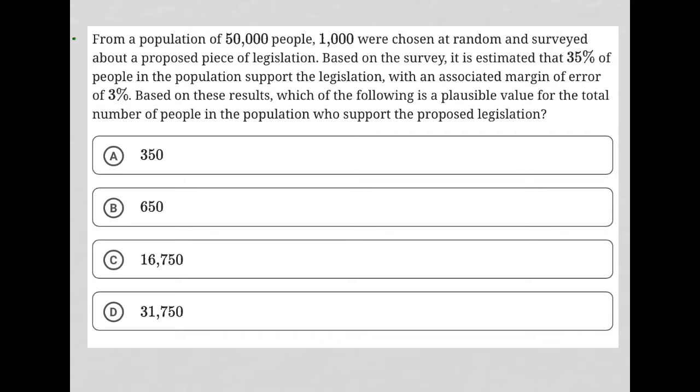So this question says, from a population of 50,000 people, 1,000 were chosen at random and surveyed about a proposed piece of legislation.